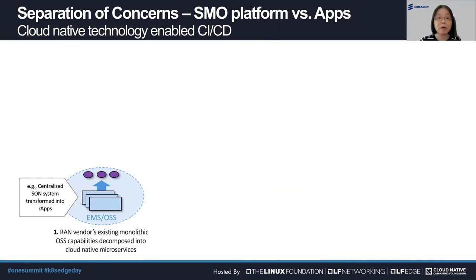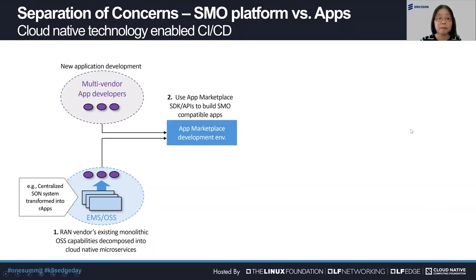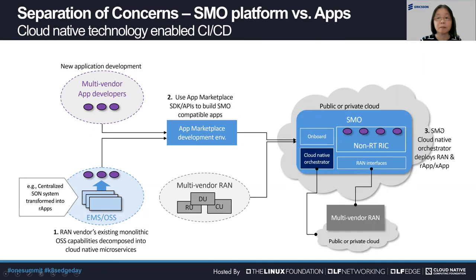Separation of concerns: here we are going to talk about the SMO platform versus applications, and how cloud-native technology is enabling the CI/CD process. Starting with application development — step one: for a vendor, the existing large monolithic OSS, such as traditional EMS for FCAPS management and SON systems for automation, are decomposed into cloud-native microservices. Step two: the RAN vendors' applications, as well as third-party-developed applications, may be published and verified via a marketplace, where non-RT RIC management APIs are exposed for developers to build O-RAN non-RT RIC-compatible RApps. Step three: the SMO cloud-native orchestrator deploys both RAN network functions and RApps and XApps to manage the network functions.